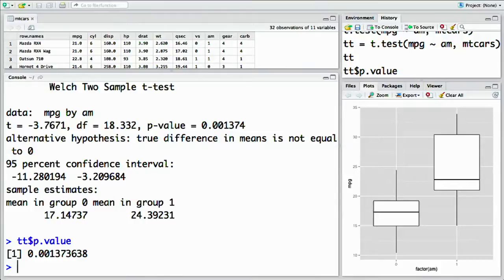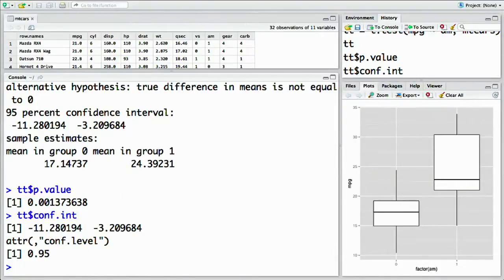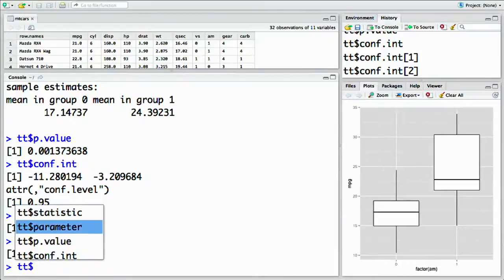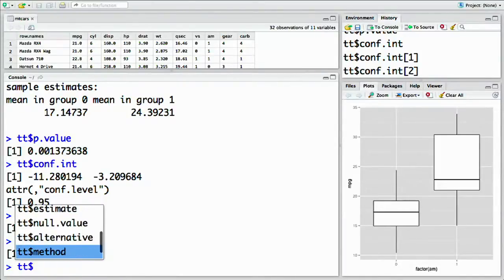Similarly, we can extract the confidence interval by doing tt dollar sign conf dot int. You can use tab to autocomplete it. Notice that the confidence interval contains the lower bound and the upper bound as a vector, but also the actual confidence level, in this case a 95% confidence interval. You can extract just the lower bound or the upper bound by doing bracket 1 or bracket 2, just like any vector in R. Notice that if you do tt dollar sign and then tab, you can find out a list of all the values you can extract from the t-test object.